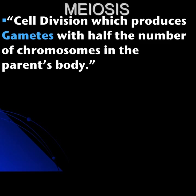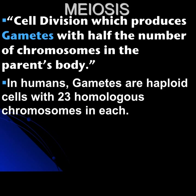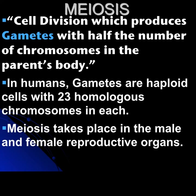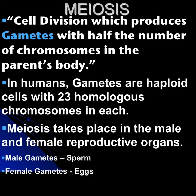Meiosis is cell division which produces gametes with half the number of chromosomes that the parent's body has. In humans, gametes are haploid — half the number — haploid cells with 23 homologous chromosomes in each. Meiosis takes place in the male and female reproductive organs. The male gametes create sperm and the female gametes create eggs.